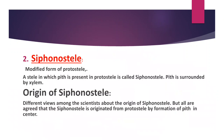Siphonostele: the siphonostele is a modified form of the protostele. A stele in which pith is present within the protostele is called a siphonostele — the pith is surrounded by xylem. Regarding the origin of this type, there are different views among scientists, but all agree that the siphonostele originated from the protostele by the formation of pith in the center.